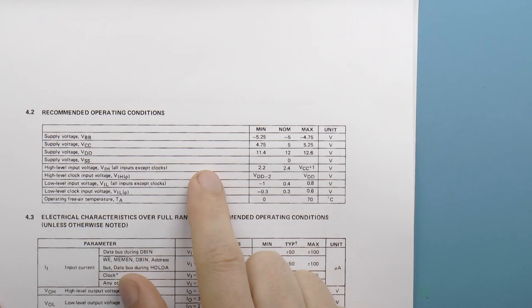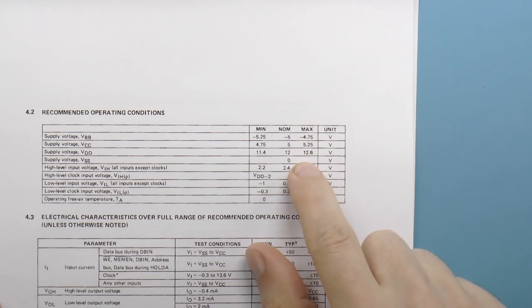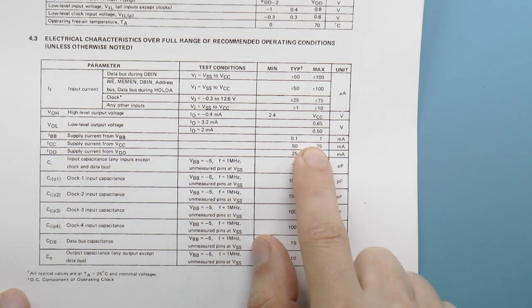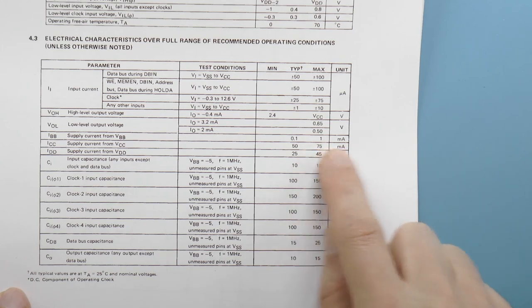In terms of power supply, it needs plus and minus 5 volts and 12 volts. I can do that. The minus 5 volt supply takes just a small amount of current, so a little switching regulator should be fine for that.